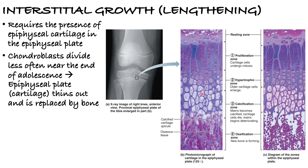Next is the hypertrophic zone, where older cartilage cells in the lacunae are enlarging or getting bigger. In the third zone, the calcification zone, the surrounding cartilage matrix calcifies — it becomes more hardened — and the chondrocytes start to die. The last zone is the ossification zone, where we see calcified cartilage at the epiphysis-diaphysis junction and new bone begins forming, causing lengthening.